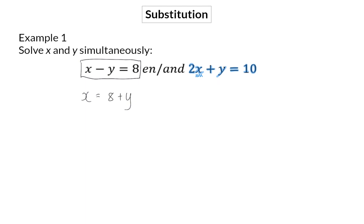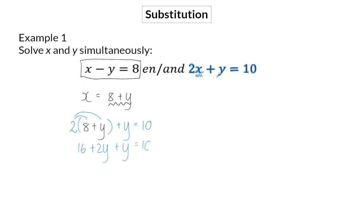When doing substitution, it is important to work with brackets. So I'm going to write the second equation, but instead of x, write a bracket. In that bracket, I'm now going to substitute the value that we got for x in terms of y, and that is 8 plus y. Now I have an equation that only has y as a variable, which means I can solve y. I'm going to multiply the 2 into the bracket to get 16 plus 2y plus y equals 10. That means I now have 3y equal to minus 6, and that means that y is equal to minus 2.